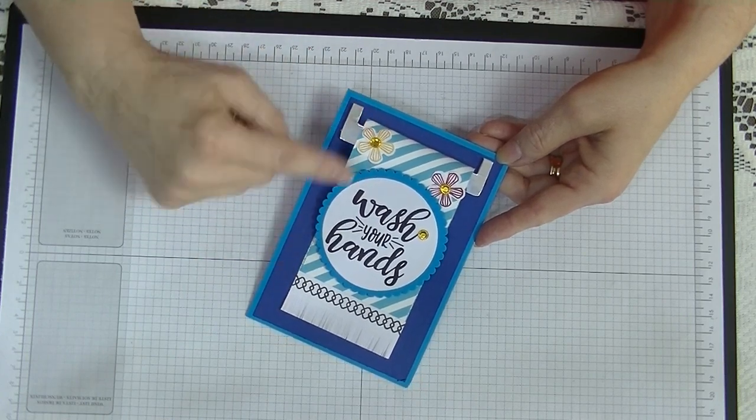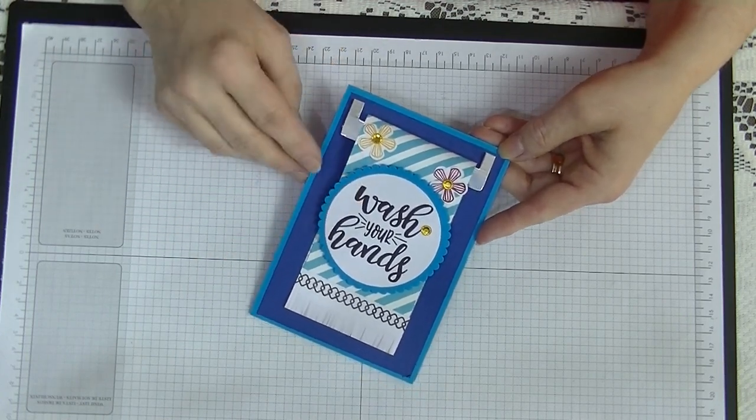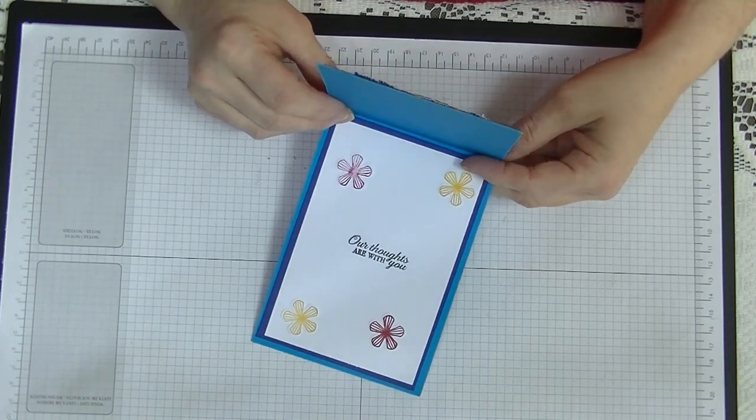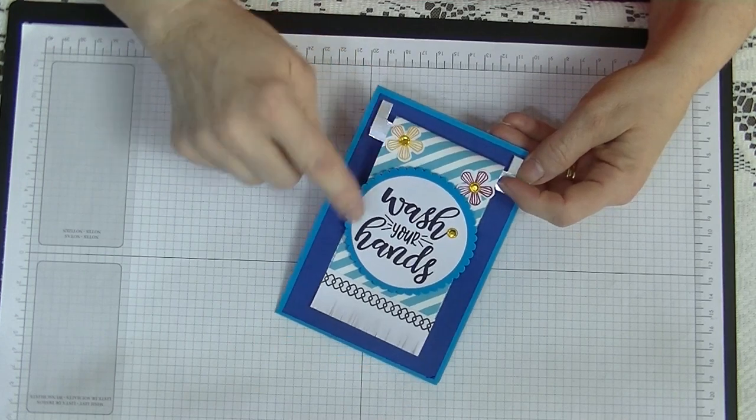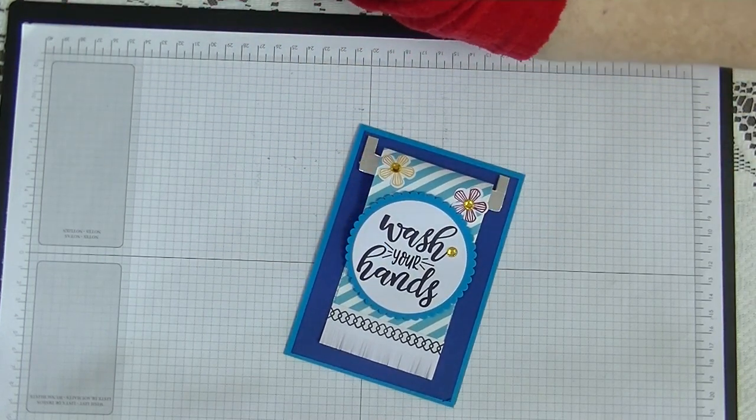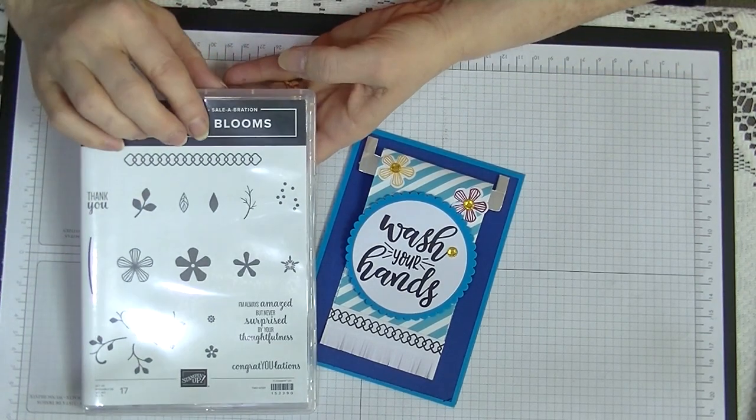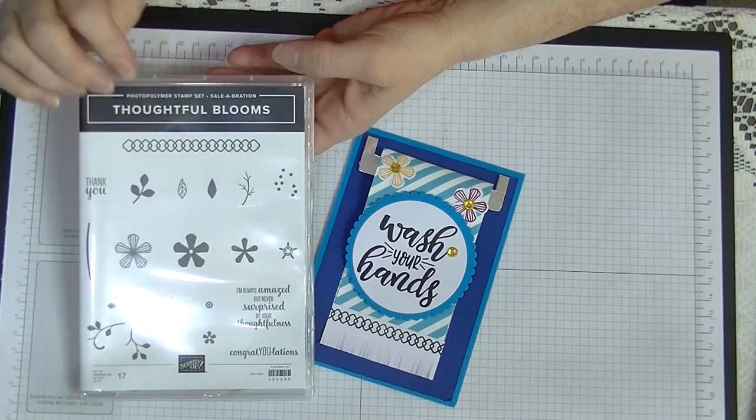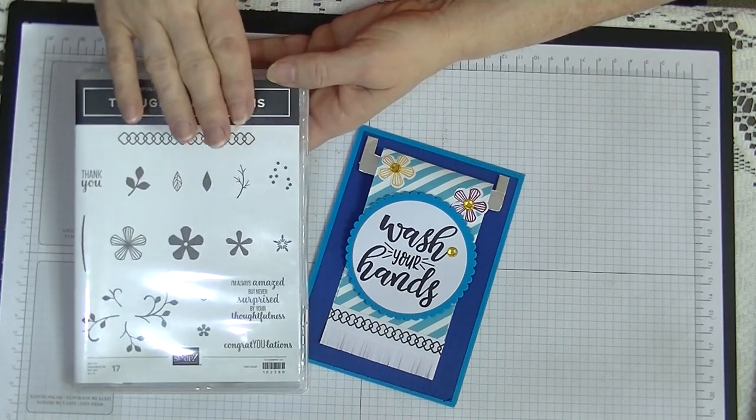So this card looks like a towel on a towel rail, that's why it's got Wash Your Hands written on it and on the inside it has Our Thoughts Are With You, but I am going to use a different set because this set here that I used is actually retired. It was this set called Thoughtful Blooms, so that's now retired.